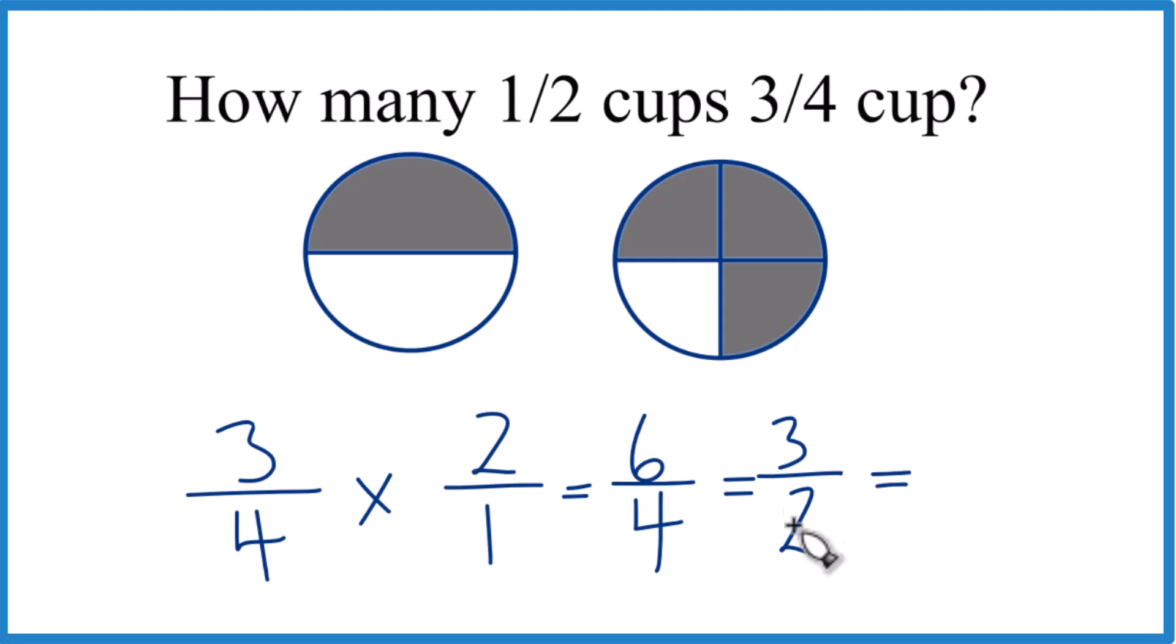And if you want to have a mixed number, two goes into three one time with one left over, then we bring the two across. So one and one half, that would be your mixed number. So that's how you figure out how many one half cups are in three fourths of a cup. This is Dr. B, thanks for watching.